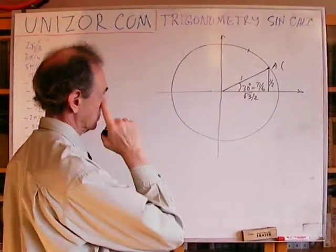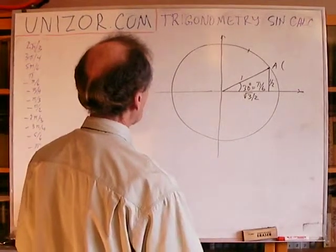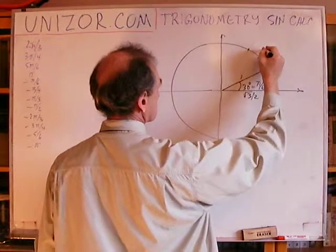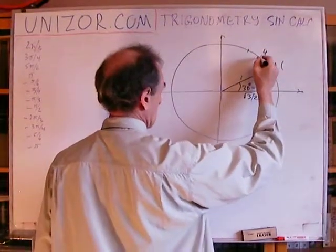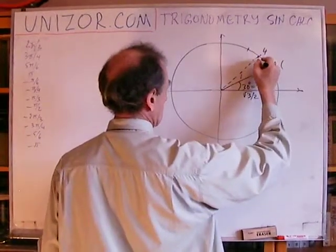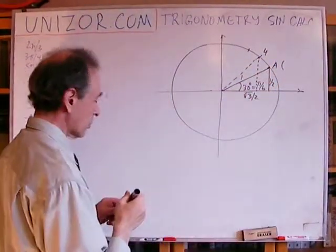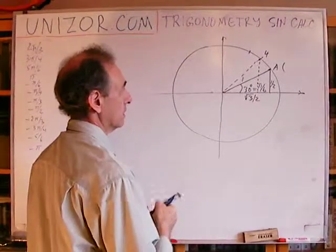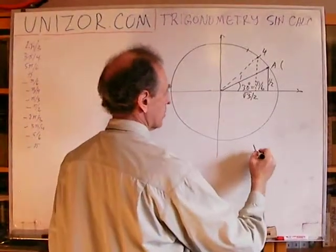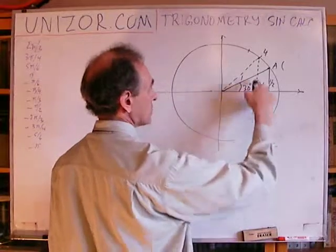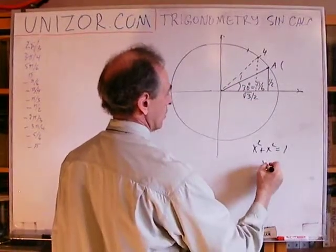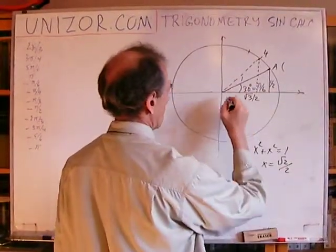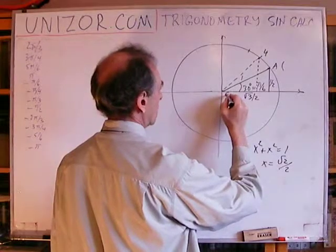My first angle is 45 degrees. I don't have to remember the ordinate and abscissa separately because they are equal. From the Pythagorean theorem: x squared plus x squared equals one, so x equals square root of two over two.